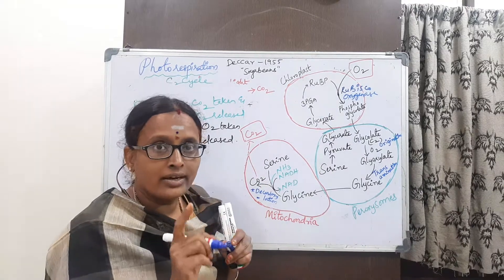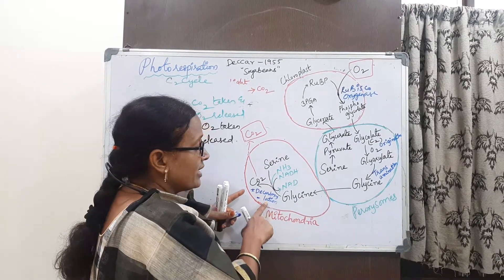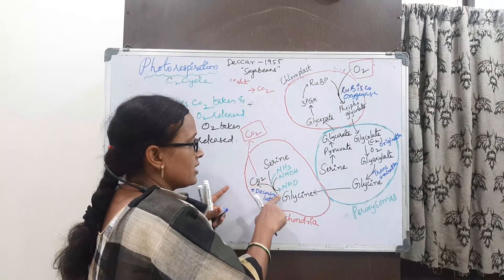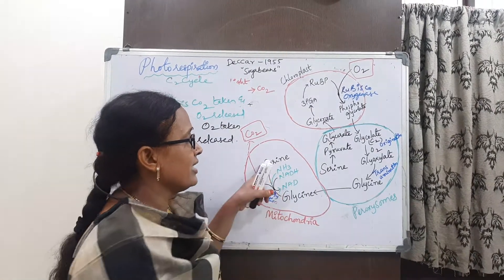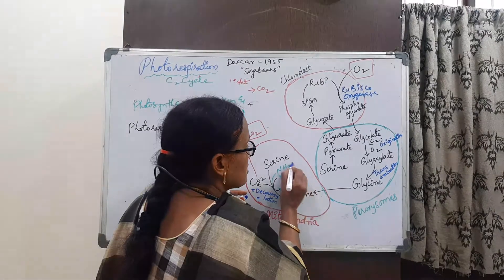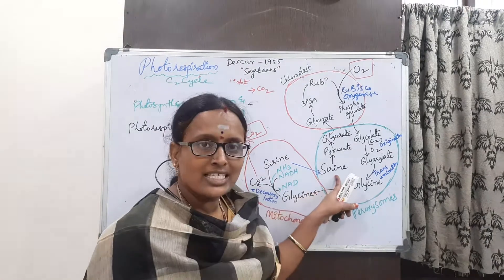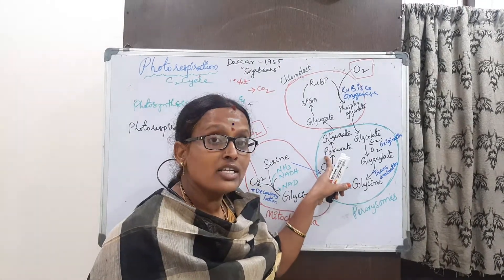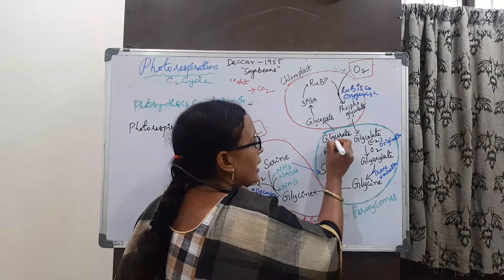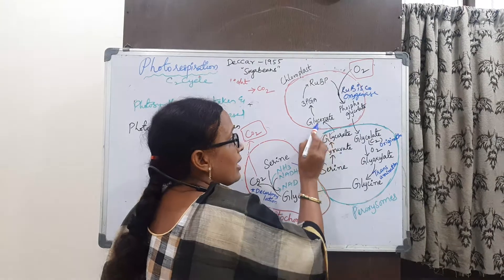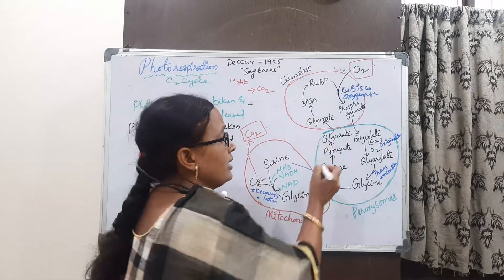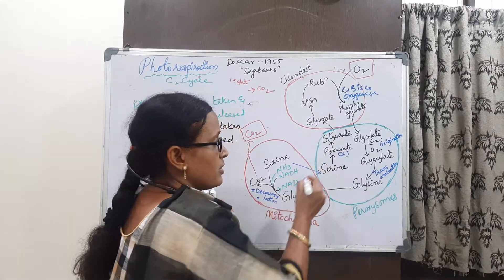In the mitochondria, deamination takes place. Ammonia is released and carbon dioxide is released. Serine is then produced, which diffuses back to the peroxisomes. There it is transformed into pyruvate and glycerate. Glycerate then enters back into the chloroplast for regeneration.